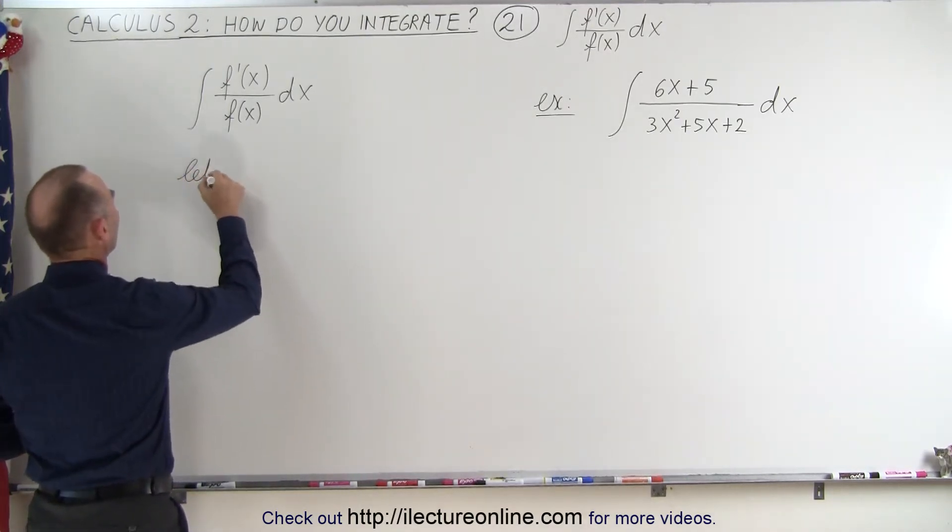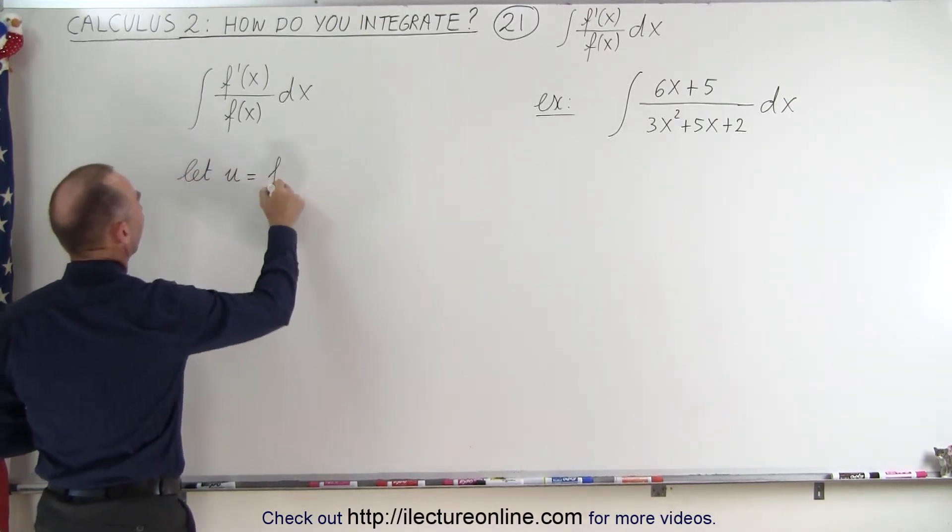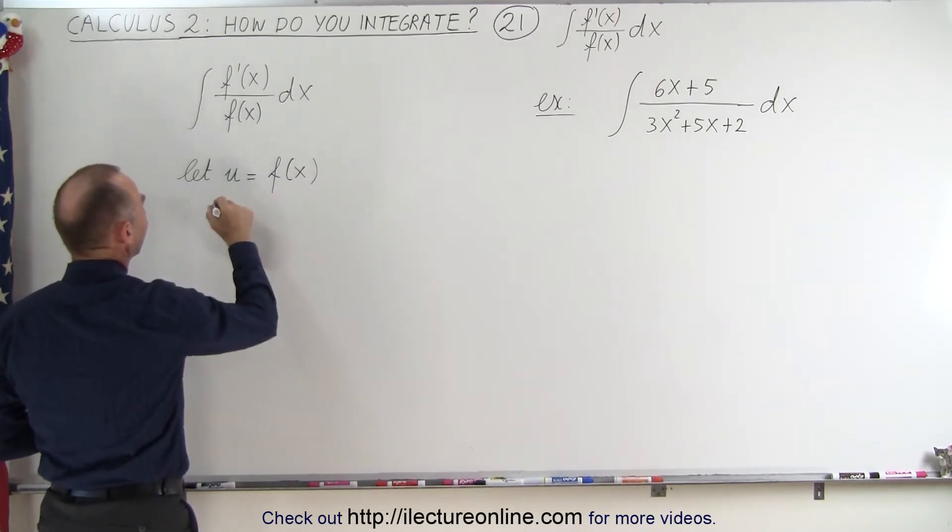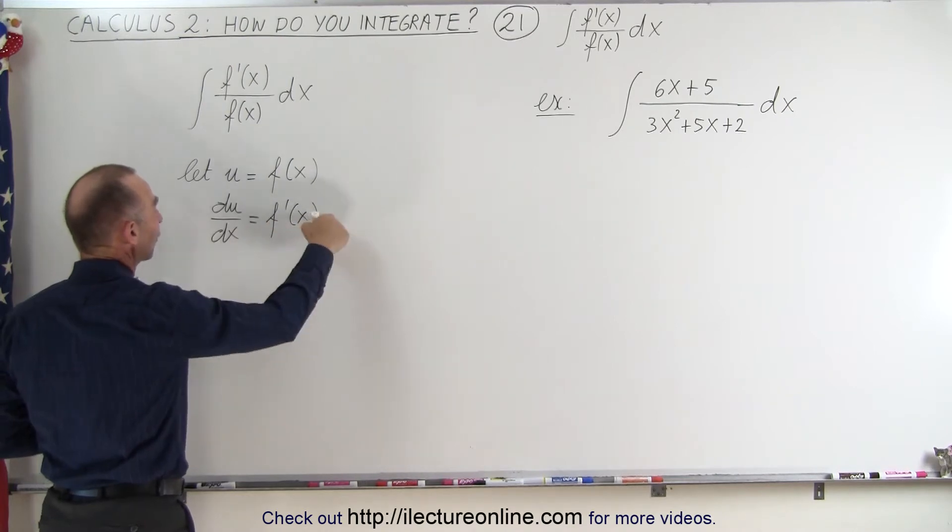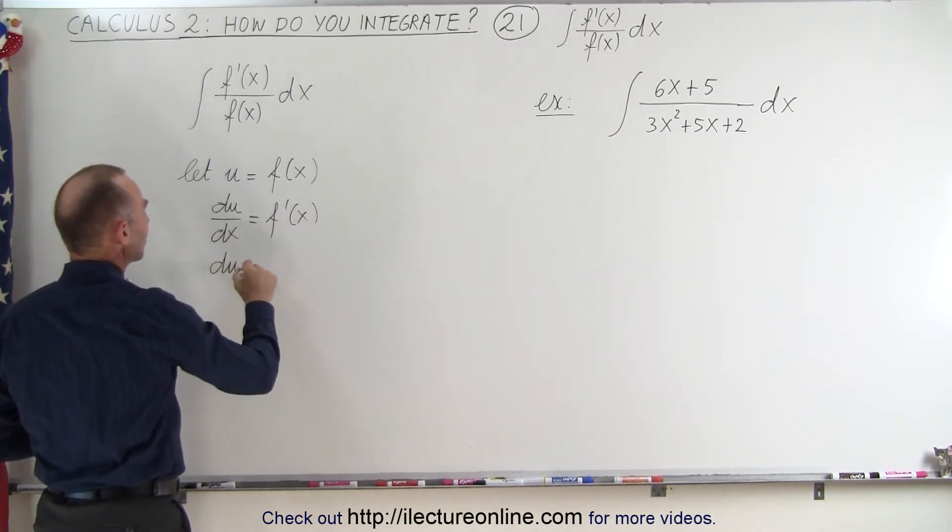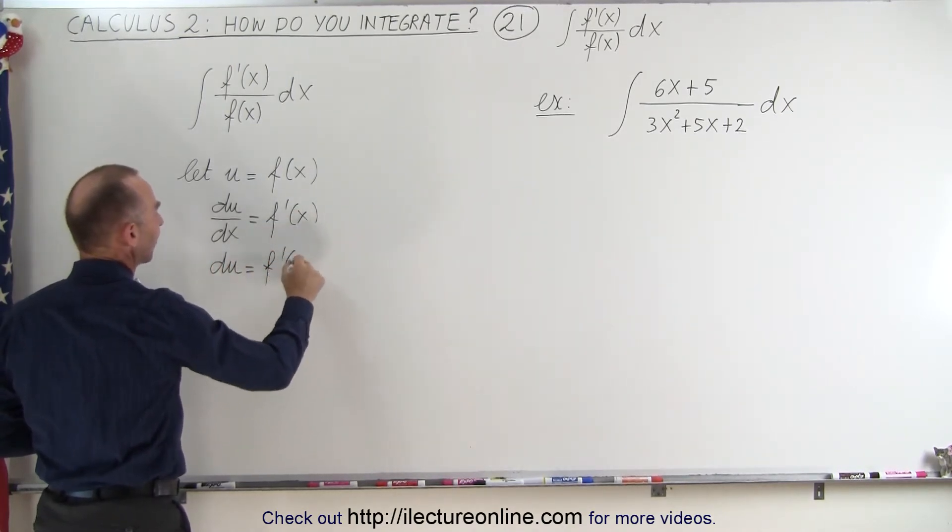We can say let u equal f of x. Then the derivative of that, du dx, is going to be equal to f prime of x. And then if we move the dx over here we can say that du is equal to f prime of x dx.